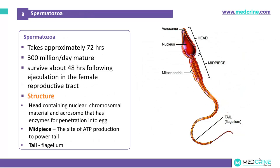The final product is the spermatozoon or sperm cell. Sperm cells take approximately 72 hours to form and about 300 million sperms mature per day; they survive about 48 hours following ejaculation into the female reproductive tract. Structure-wise, the sperm has a head, a midpiece, and a tail. The head contains nuclear chromosomal material and an acrosome with enzymes responsible for penetration into the ovum. The midpiece has mitochondria, which is the site of ATP production to power the tail, which is a flagellum.